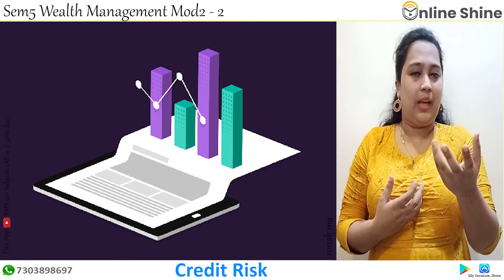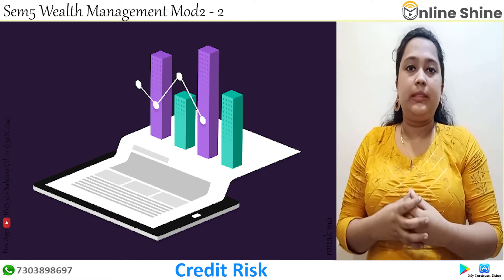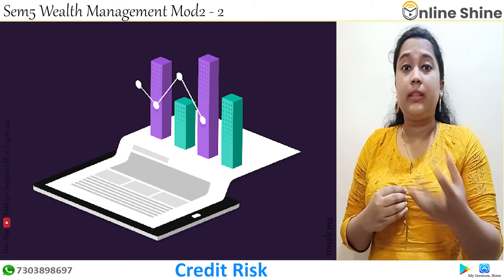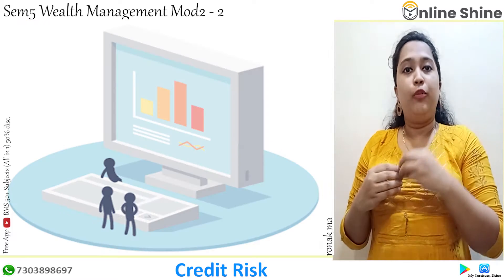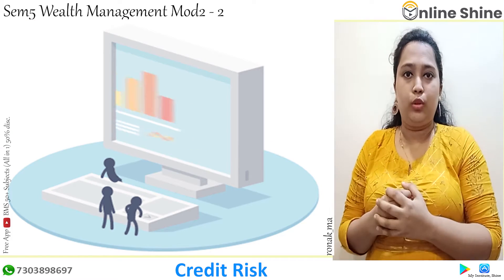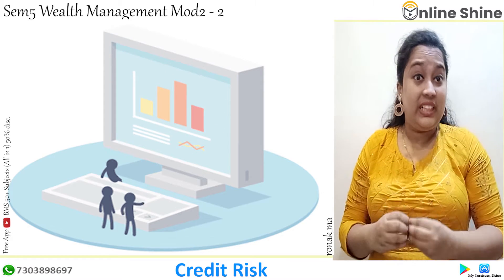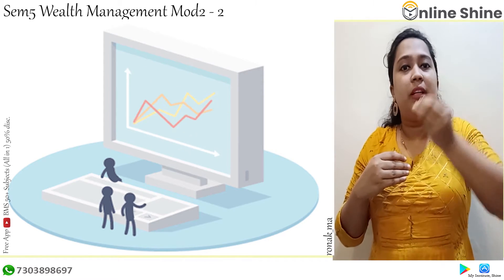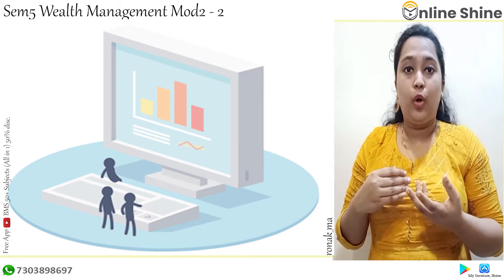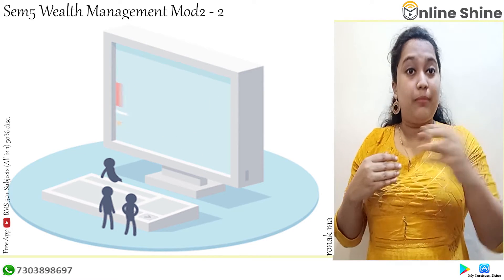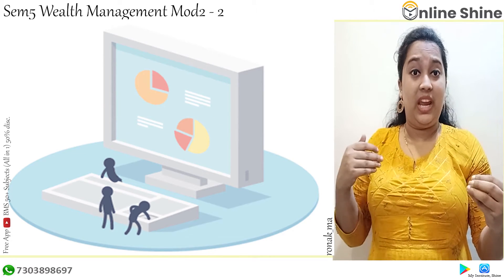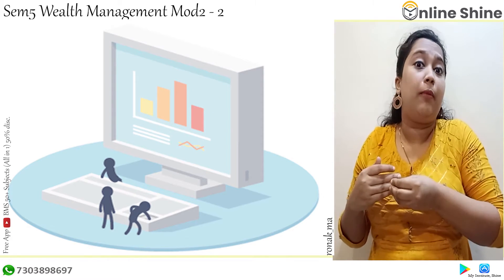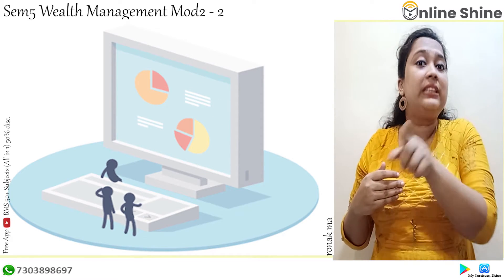The next one is credit risk. For example, if there is a businessman Mr. A, he gives credit to his customers when they buy products from him — he gives the goods on credit. There is a risk that going forward, the customer may not be able to pay him back. The money which the customer borrowed from Mr. A — because of some reason, he may not be able to pay that. That risk is credit risk.